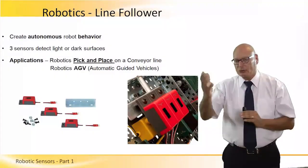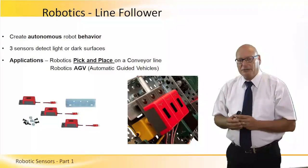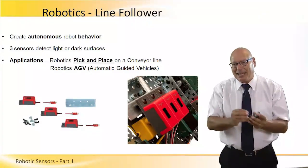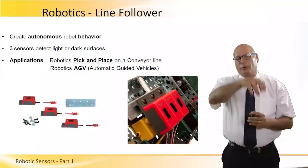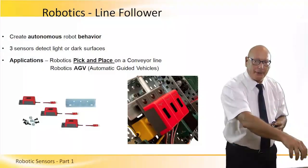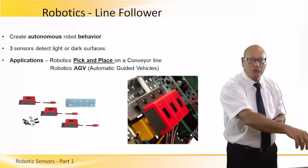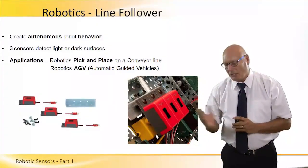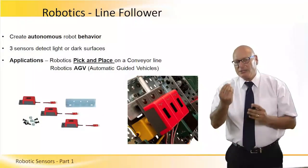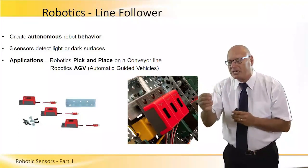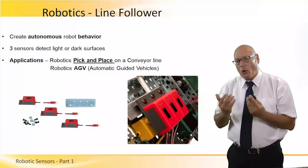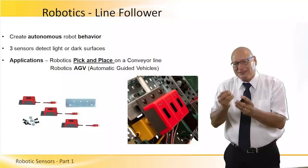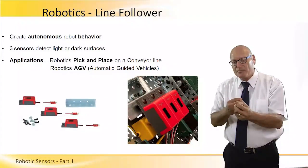A line follower. We talked about AGVs before. This device is a light-dark detector — it detects light or dark surfaces. It's also used for pick and place: the robot goes from a point where it detects a black spot and places the object at another position where there is another black spot in a white environment. It creates autonomous robot behavior — the robot moves from black spot to black spot, or white spot to white spot, using this sensor that discriminates between light and dark, between white and black.